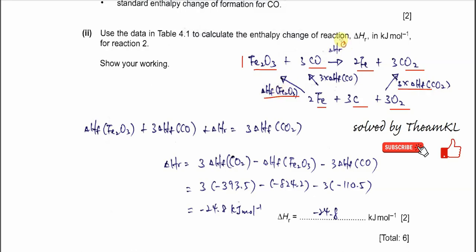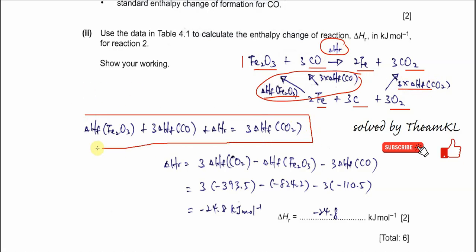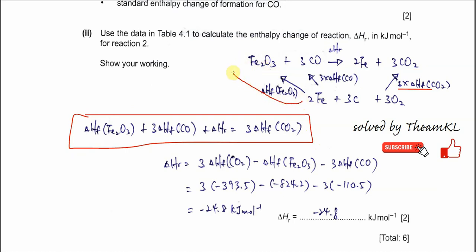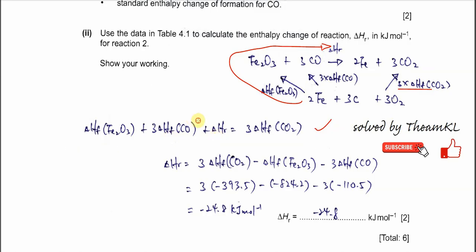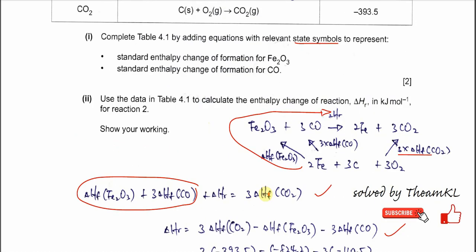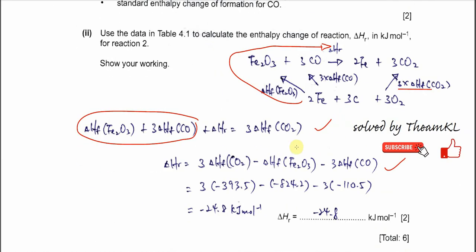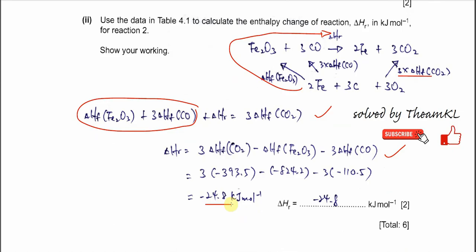Using Hess's cycle, we know that ΔHr plus the reactant formation enthalpy equals the product formation enthalpy. Rearranging gives us ΔHr equal to the product side enthalpy minus the reactant side enthalpy. Substituting the values from table 4.1 into this equation, we get negative 24.8 kJ per mole.